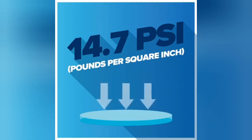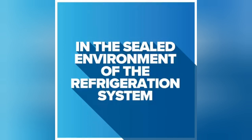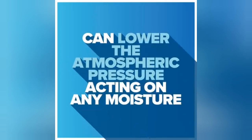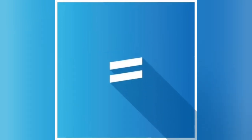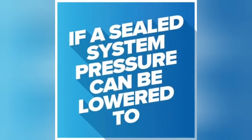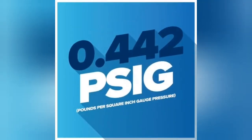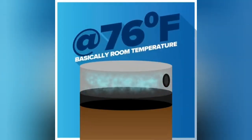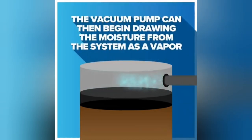In the sealed environment of a refrigeration system, a vacuum pump designed for this purpose can lower the atmospheric pressure acting on any moisture present in the system. The lower pressure will also mean a lower boiling temperature of that liquid. For example, if a sealed system pressure can be lowered to 0.442 psig — that's pounds per square inch gauge pressure — the moisture will boil and change state from a liquid to a vapor at 76 degrees Fahrenheit, which is basically room temperature. The vacuum pump can then begin drawing the moisture from the system as a vapor.